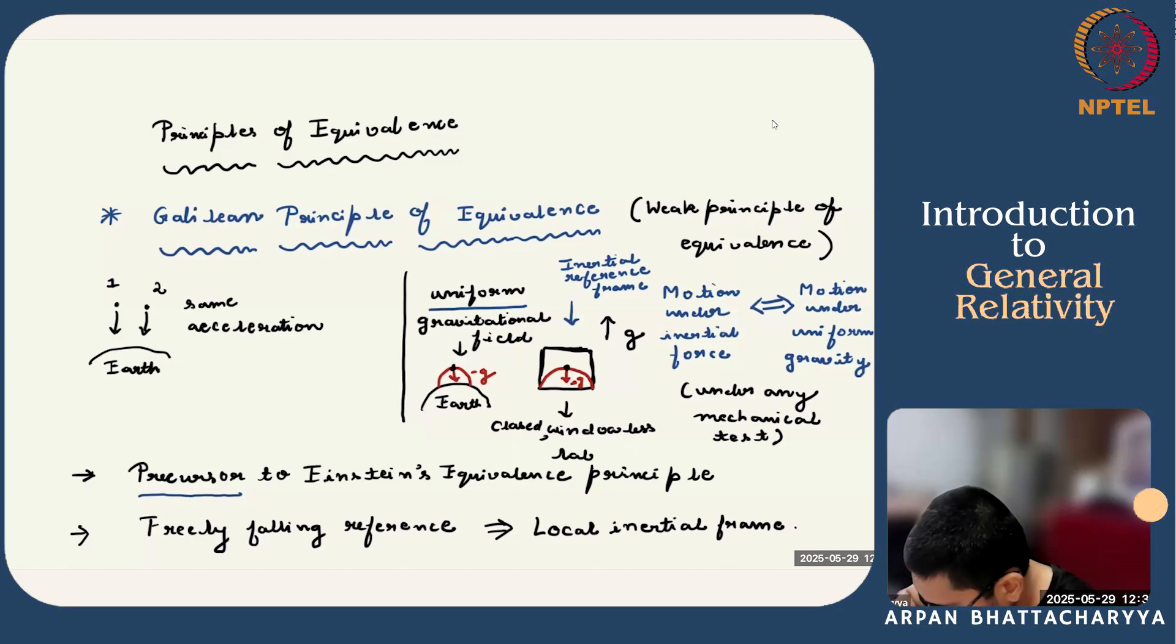And Galileo says that these two scenarios are equivalent. That is, motion under inertial force is equivalent to motion under uniform gravity under any mechanical test. Just to reiterate, there are some key assumptions made here that the gravitational force remains uniform across the breadth of this object or the lab and over the entire duration of the experiment. Also, you are only performing mechanical tests.